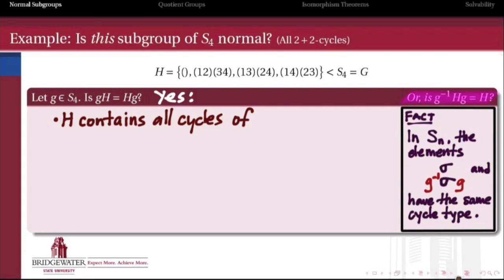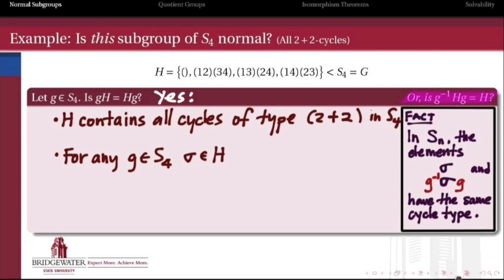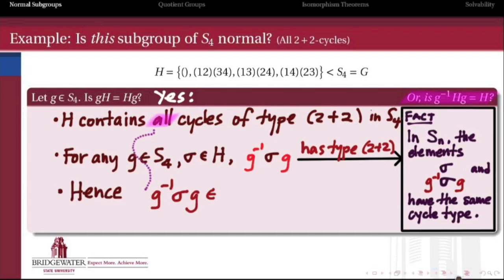So here's how it goes. First of all, this subgroup H actually contains all of the 2 plus 2 cycles that exist in the symmetric group on 4 symbols. So every 2 plus 2 cycle is here, represented in H. Meanwhile, if I take any element of S4 and some element inside of H, and I conjugate that element of H by my element from S4, then this fact tells me that that conjugated permutation has the same cycle type 2 plus 2 as the original. But since H contained all of the cycles of type 2 plus 2, that means that this conjugate also has to belong to H. And because my sigma was arbitrary, that means that if I conjugate the entire subgroup H by any element G in S4, the result is H itself again. So indeed, H is a normal subgroup of S4.